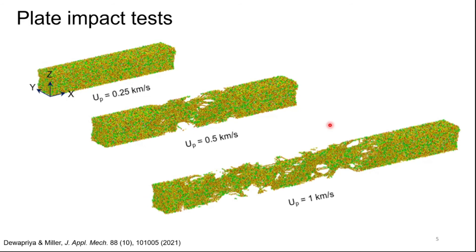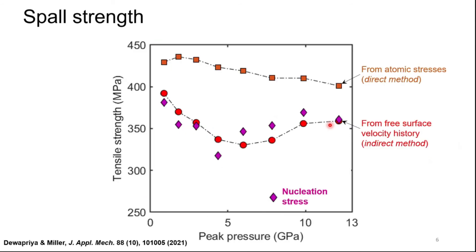These are some of our plate impact test simulations. We computed the spall strength by following two methods. The first method is an indirect method, which uses the free surface velocity history. This method is commonly used in macroscopic experiments.